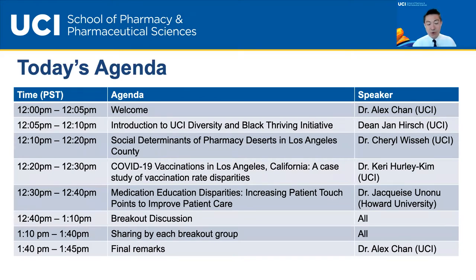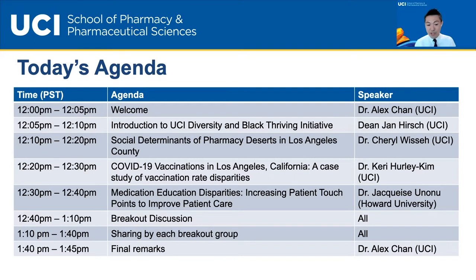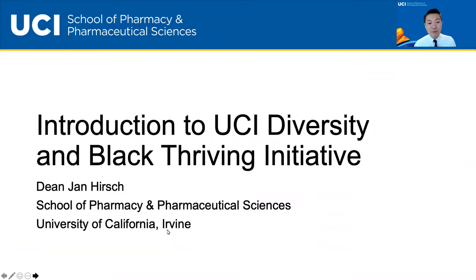After this introduction, we'll have Dean Hirsch speak about our diversity and Black Thriving Initiative at UCI. Then our speakers will present case studies related to what they see in their own settings. We'll have breakout discussions and sharing from each breakout room. Hopefully we'll be able to develop some synergy and solutions. This is really just the first of many webinars we'll be running related to health disparities.